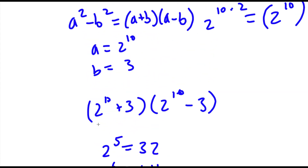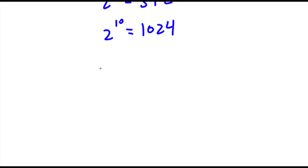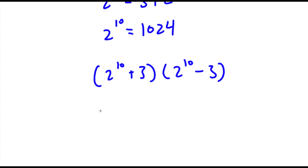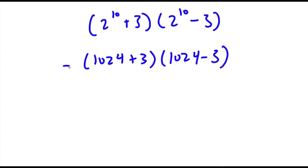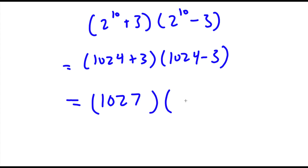So now that we have the value of 2 to the power of 10, I have 2 to the power of 10 plus 3 times 2 to the power of 10 minus 3. Since 2 to the power of 10 is 1,024, I have 1,024 plus 3 times 1,024 minus 3. Now, 1,024 plus 3 is equal to 1,027, times 1,024 minus 3, which is equal to 1,021.